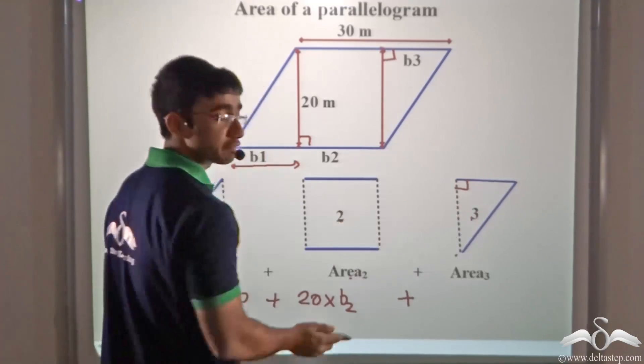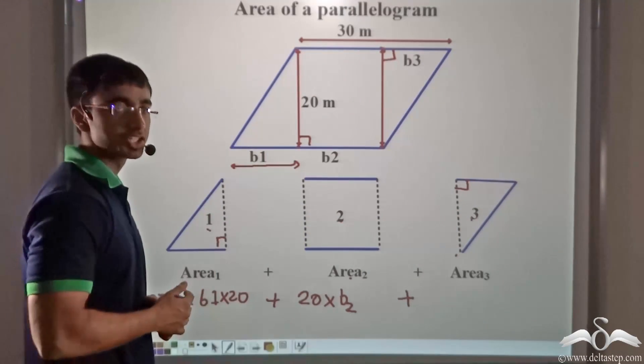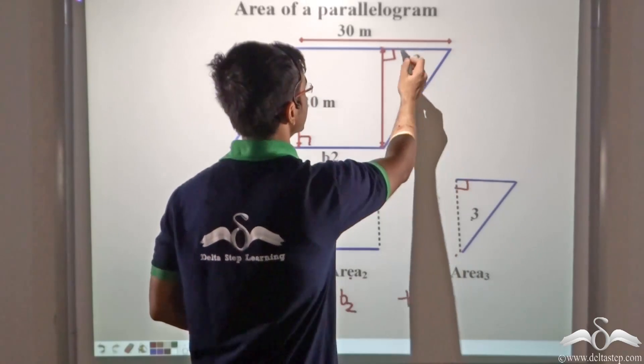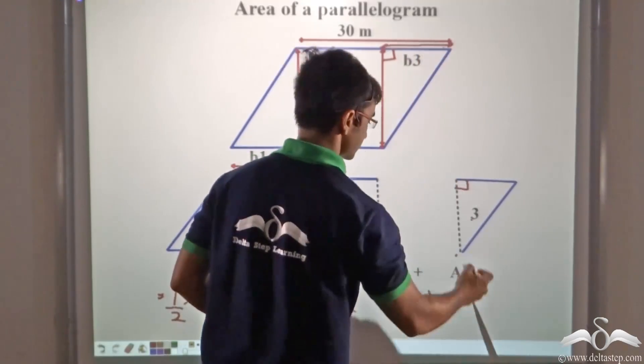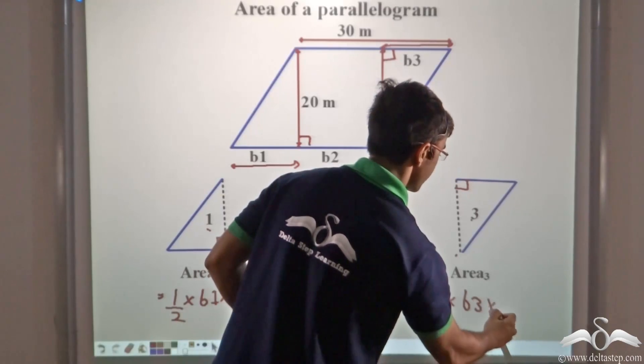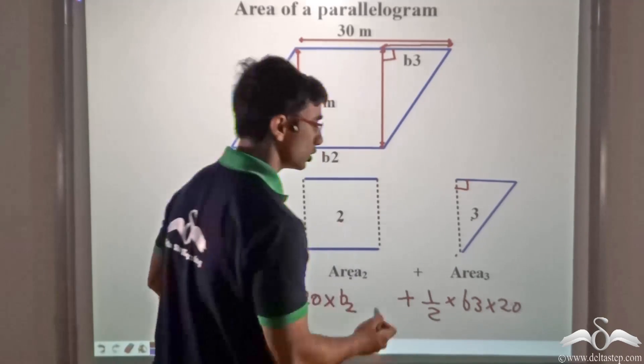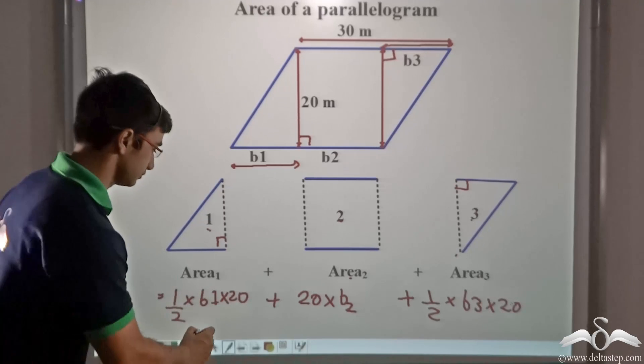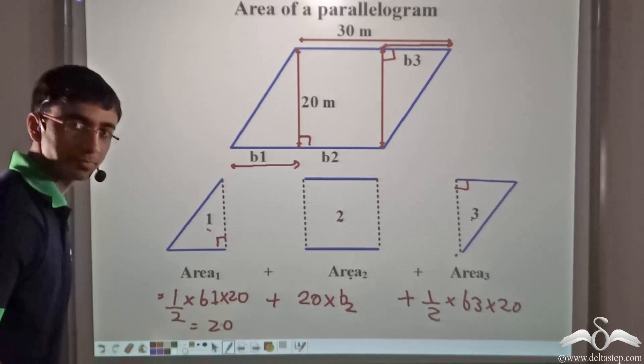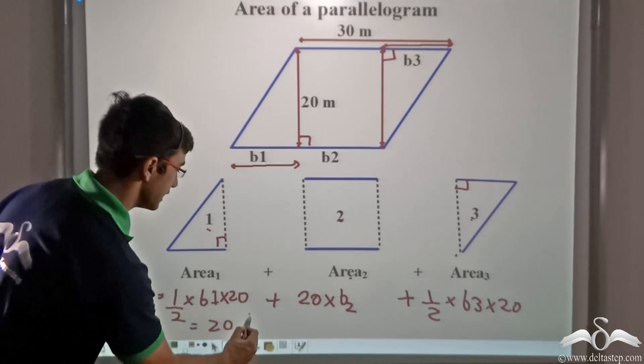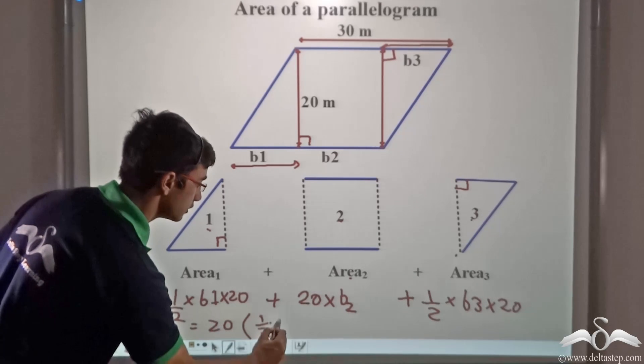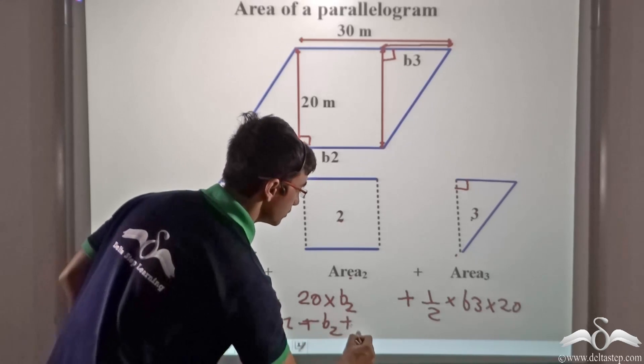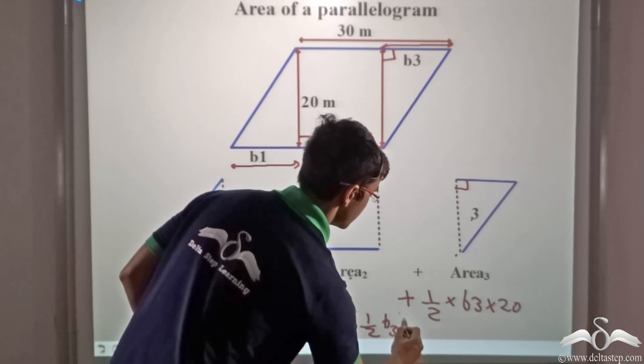the area of this particular figure that is also a right-angled triangle. So this will be half into base that is B3 into height that is also 20. So from this I can take 20 common. I take 20 common and what am I left with? I am left with half B1 plus B2 plus half B3.